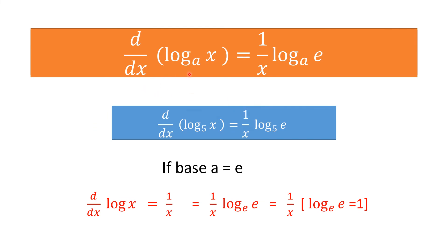The derivative of log_a(x) — that is, log of x to the base a — is 1/(x·log_a(e)). You reciprocate the term x to get 1/x, substitute x with e inside the log, and keep the base a the same. Example: derivative of log₅(x) is 1/(x·log₅(e)).